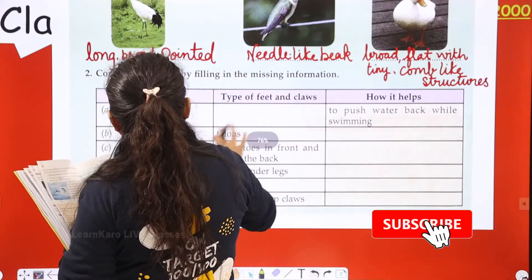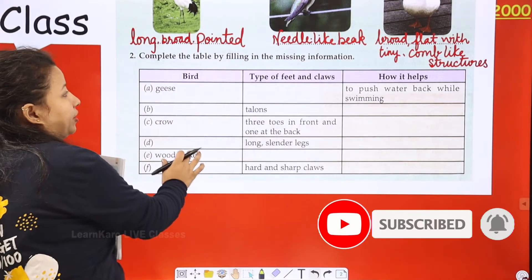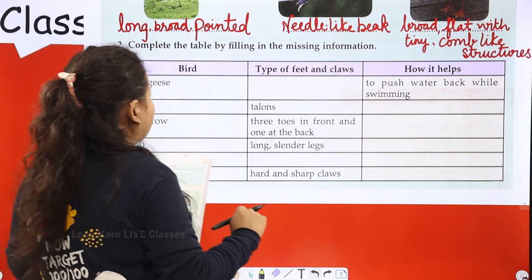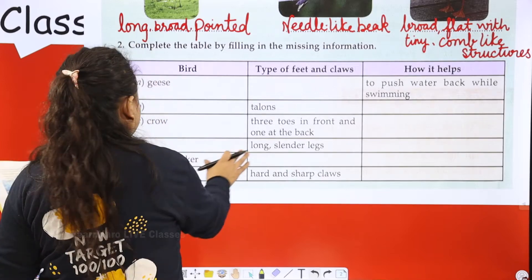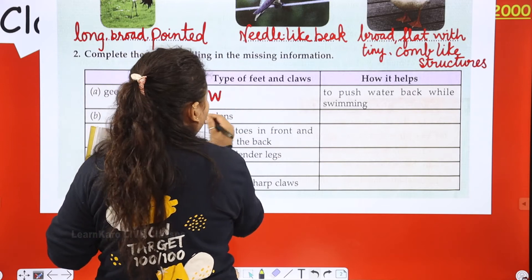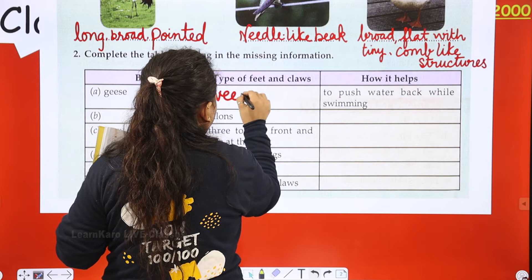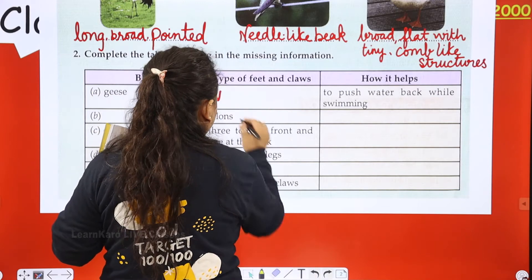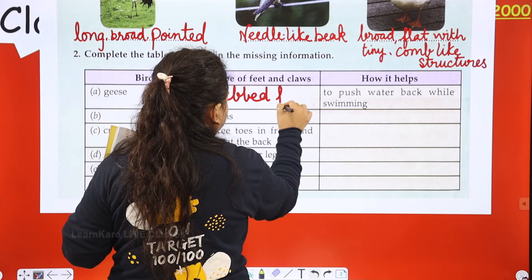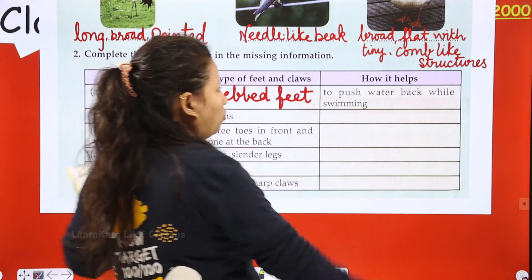Now complete the table by filling in the missing information. First is geese. The type of feet and claws is webbed feet — that means three toes in front and one at the back. Geese have webbed feet to push water back while swimming.